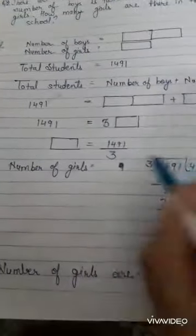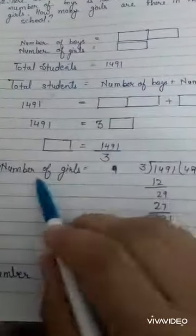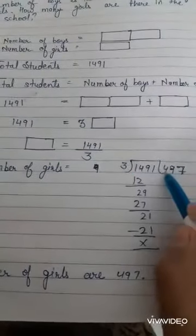And one box is equals to number of girls, so your number of girls is four hundred ninety-seven.